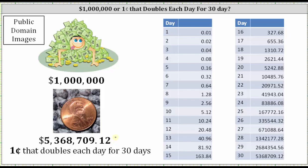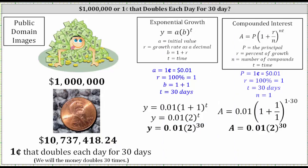Let's look at two common equations that can be used to model this growth. One equation we can use to model the doubling of the one cent is the exponential growth equation, y equals a times b to the power of t, where a is the initial or starting amount. The base b is equal to one plus r, where r is the growth rate as a decimal, and t is time.